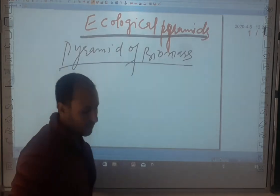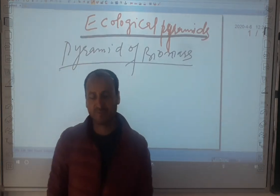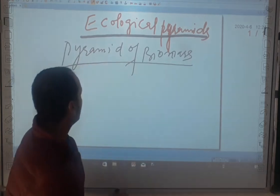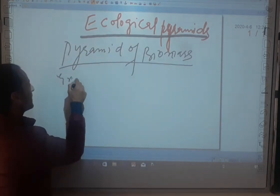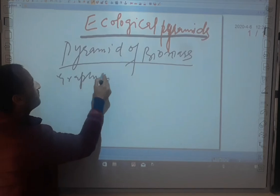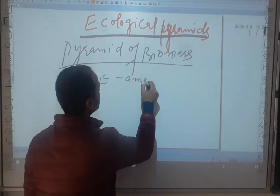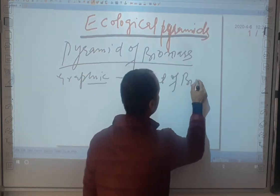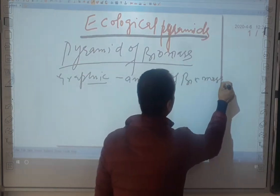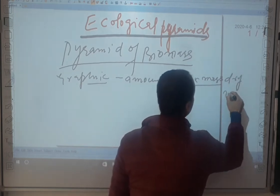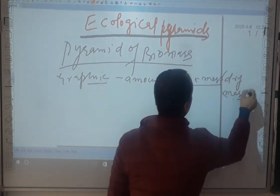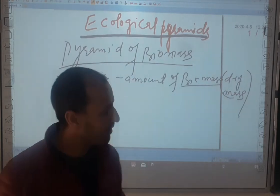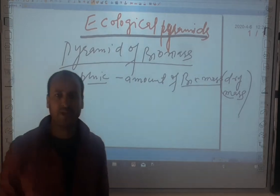We have already discussed what a pyramid is and the pyramid of numbers. Today we will discuss the pyramid of biomass. The definition is the same: it is a graphic representation of the amount of biomass present at each trophic level in a particular unit of time and in a particular geographical area — this can be represented as a pyramid of biomass.